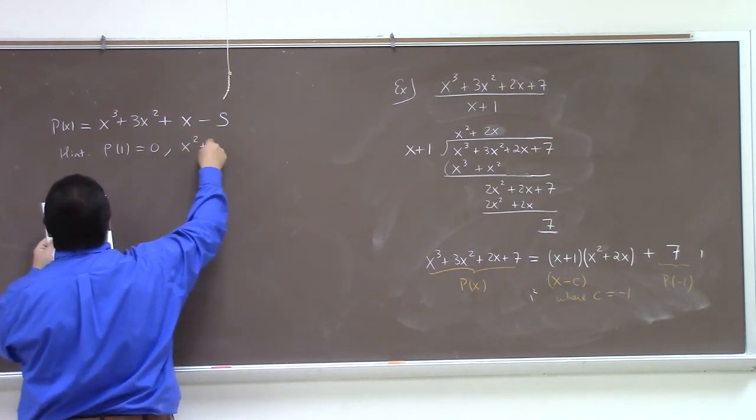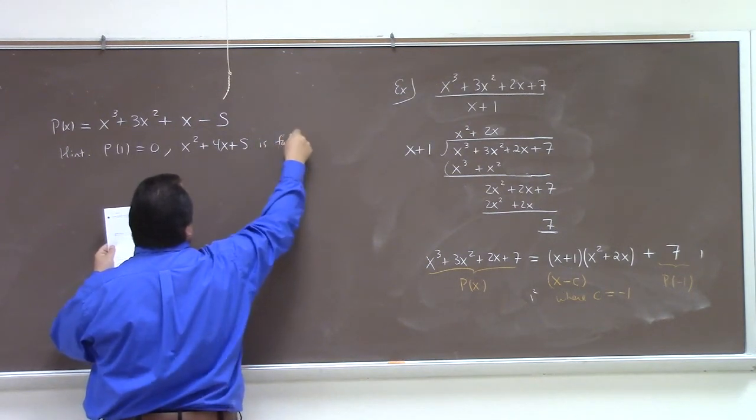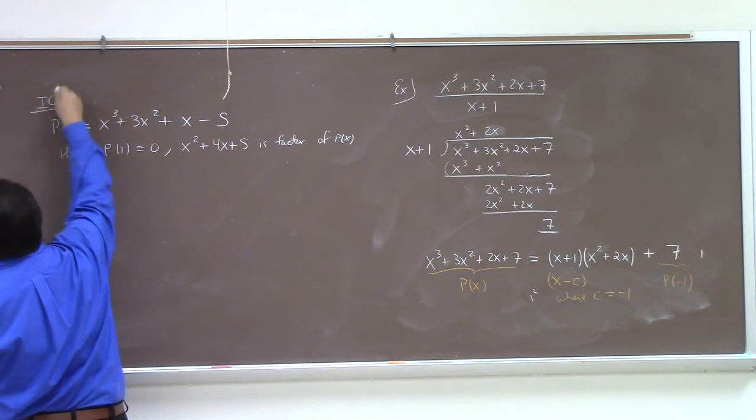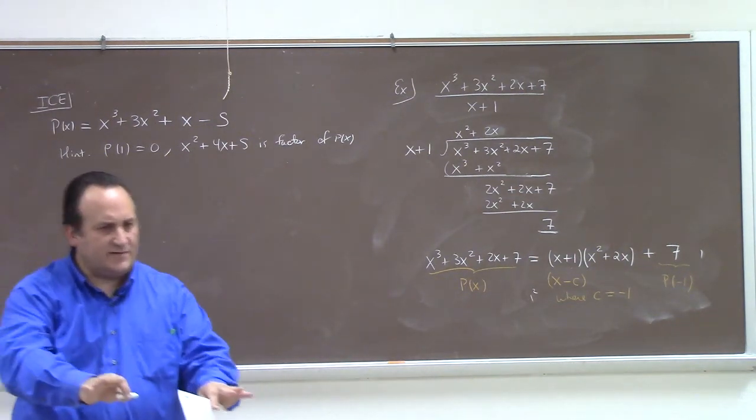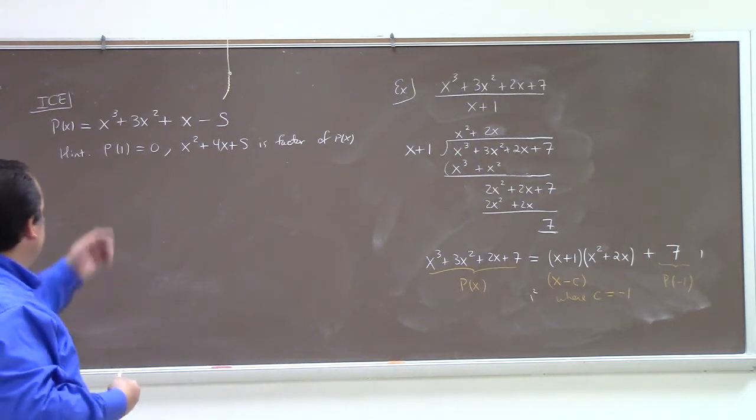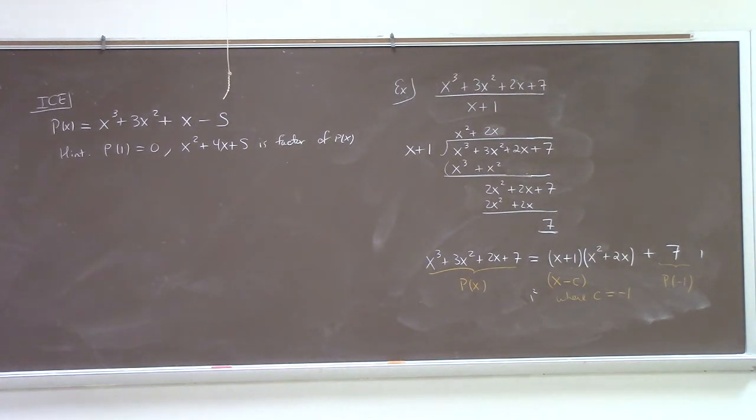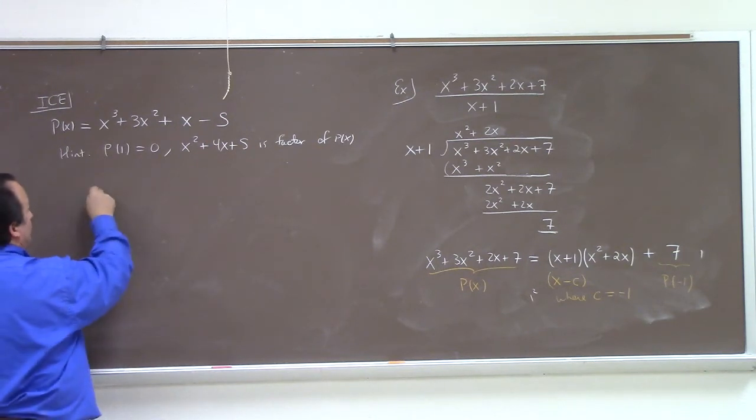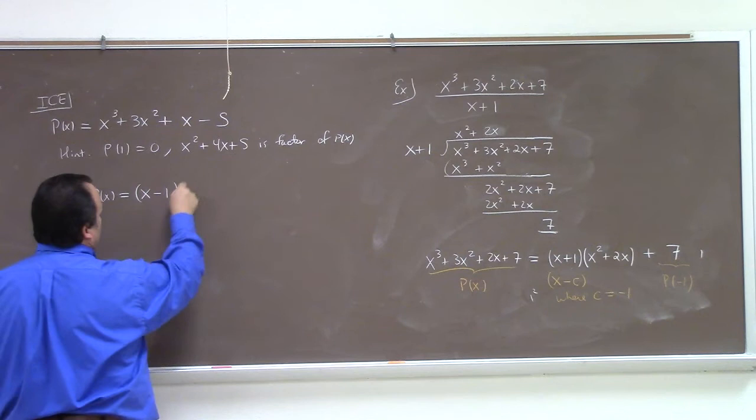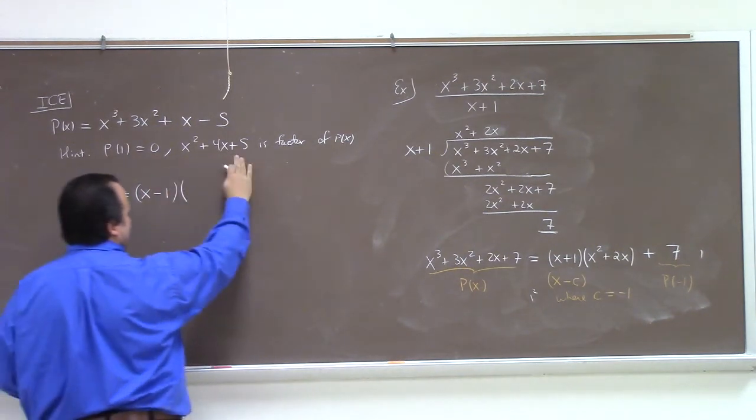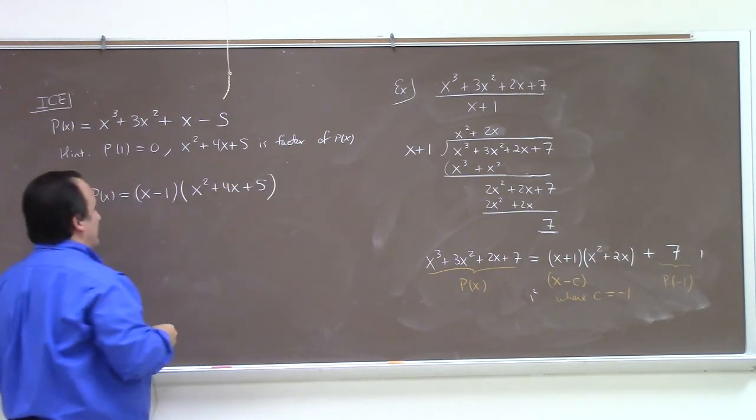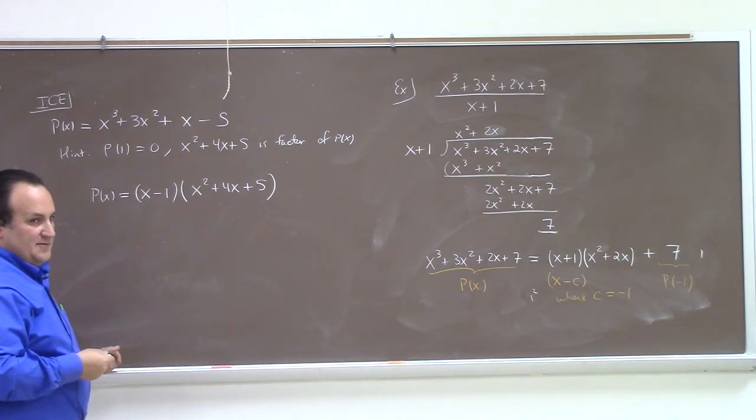x cubed plus 3x squared plus x minus 5. We're supposed to factor this. Hint, p of 1 equals 0. And x squared plus 4x plus 5 is factor of p of x. Good grief. There's like nothing to do here. What on earth is the point of this example? To me, it feels like, does it feel to you like there's something to do? It just feels to me like there's nothing to do, right? It's just, that's just me. How do you factor this? What does this tell you? By the factor theorem, this says that there's an x, it can factor out x minus 1. And what else was I told? I was told that this is a factor of p of x. So I can put this here. I think that's it.